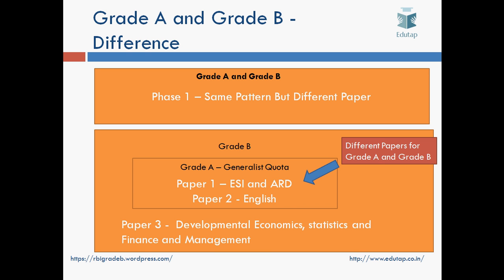So let's see what are the differences. In Grade A, the pattern is the same — you will get the same type of paper where 7 sections would be there, each section having the same number of marks. But NABARD has notified that there would be a different paper for Phase 1 for both Grade A and Grade B. So if you are applying for both, you would have to sit for a different paper — one for Grade A and one for Grade B — though the pattern shall be the same. But there might be a difference in the difficulty level.